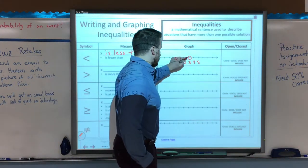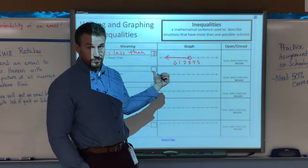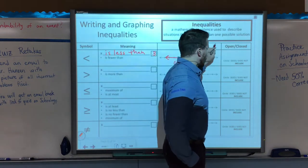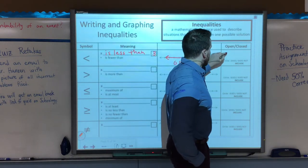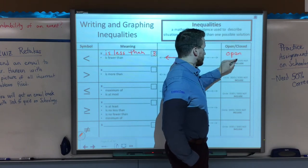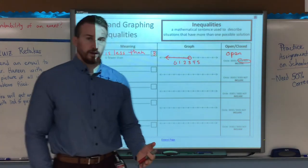So I'm going to put an open circle around 3, and draw an arrow to the left, showing that all the numbers to the left of 3, which are less, are the solutions for that. So is it open or closed? It's an open circle, and the circle does not include that number 3.